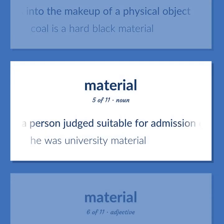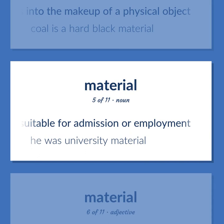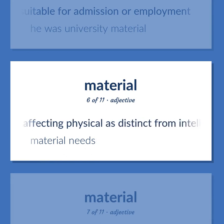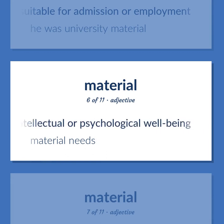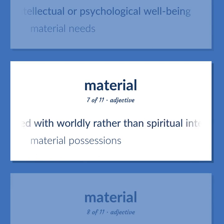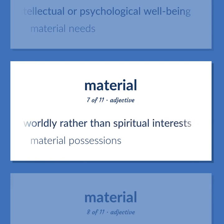Material (noun): A person judged suitable for admission or employment. Example: He was university material. Material (adjective): Concerned with or affecting physical as distinct from intellectual or psychological well-being. Example: Material needs. Concerned with worldly rather than spiritual interests. Example: Material possessions.